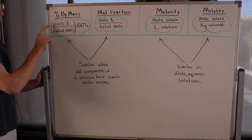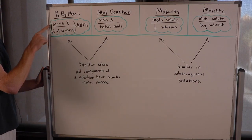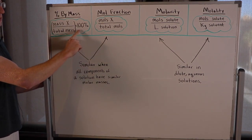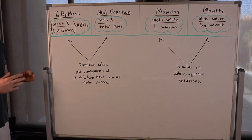Percent by mass is defined as the mass of your substance of interest, in this case I called it x, mass of x over the total mass of your solution, and we multiply this fraction by 100 to obtain a percentage.